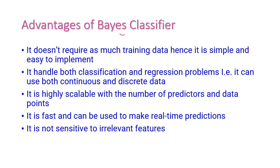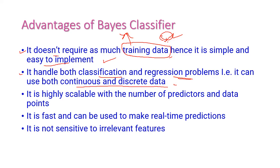Let us see some of the advantages of the Bayes classifier. It does not require much training data, making it simple and easy to implement. It can handle both classification and regression problems, using both continuous and discrete data. It is highly scalable with the number of predictions and data points. It is fast and can be used for real-time predictions because it uses eager learning methodology. And it is not sensitive to irrelevant features.